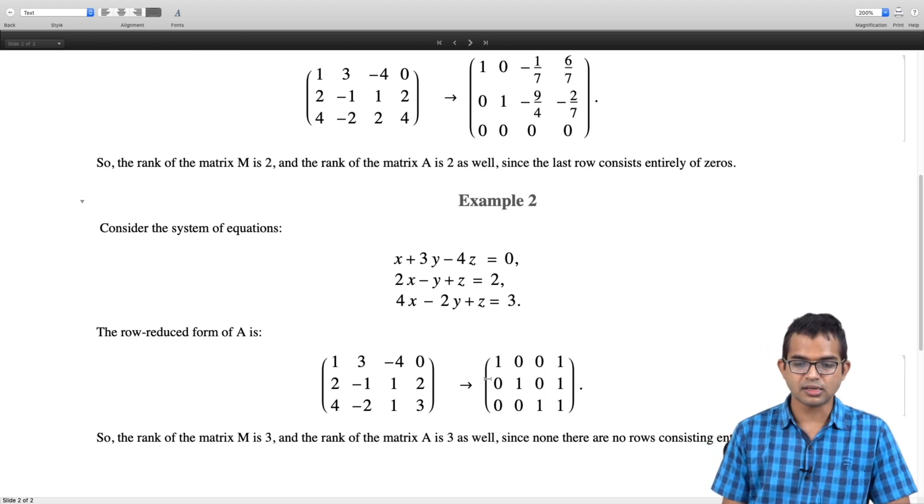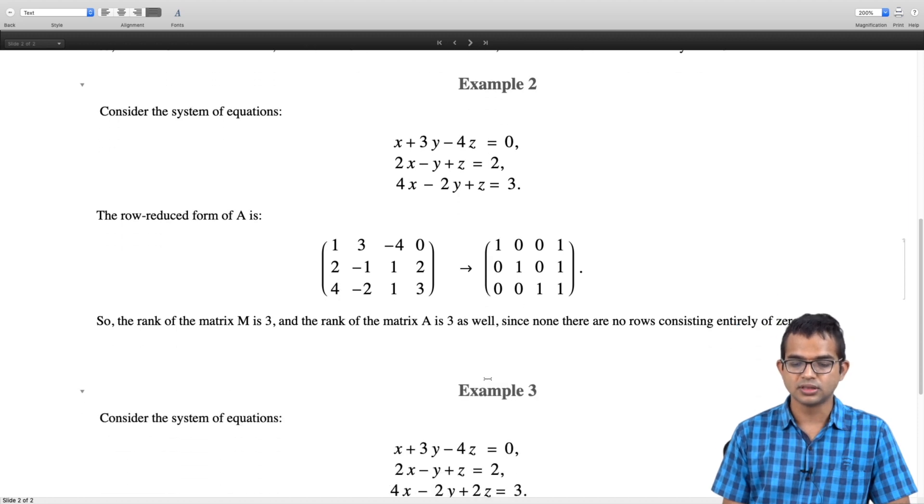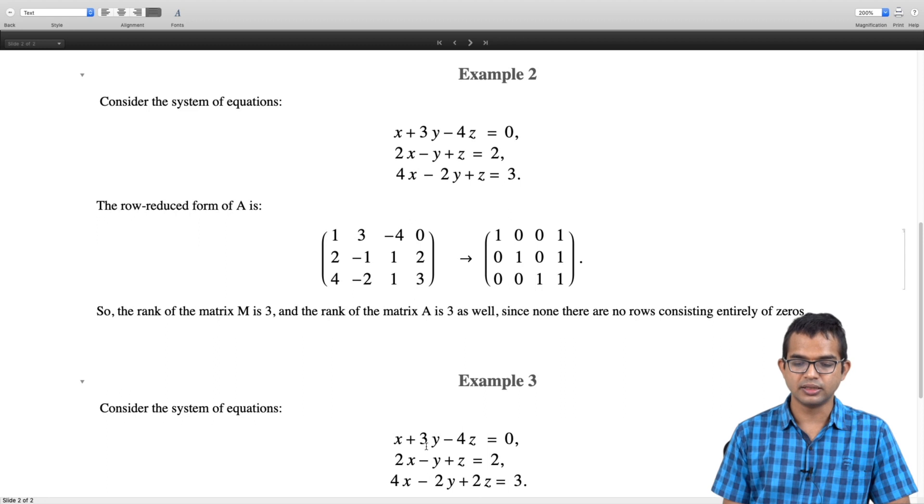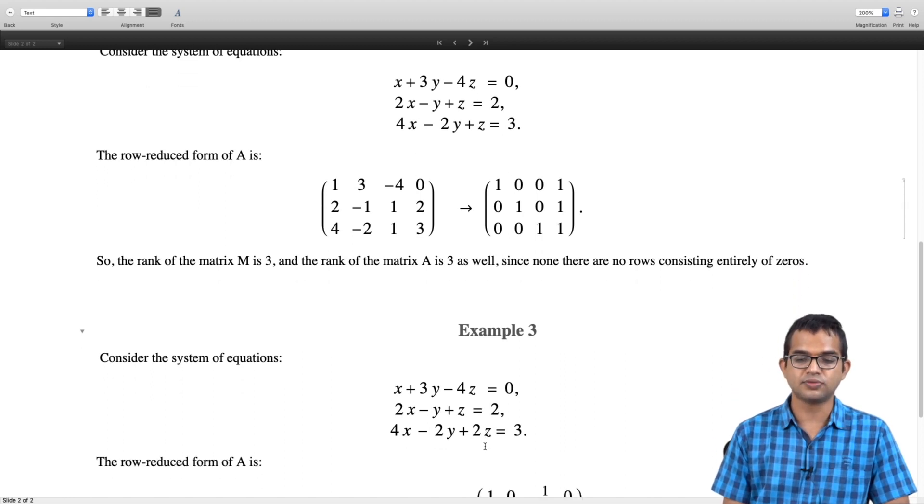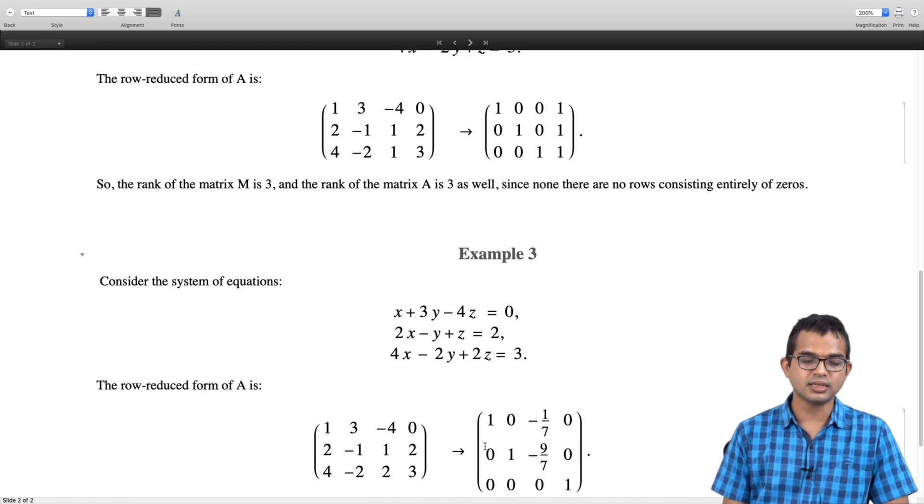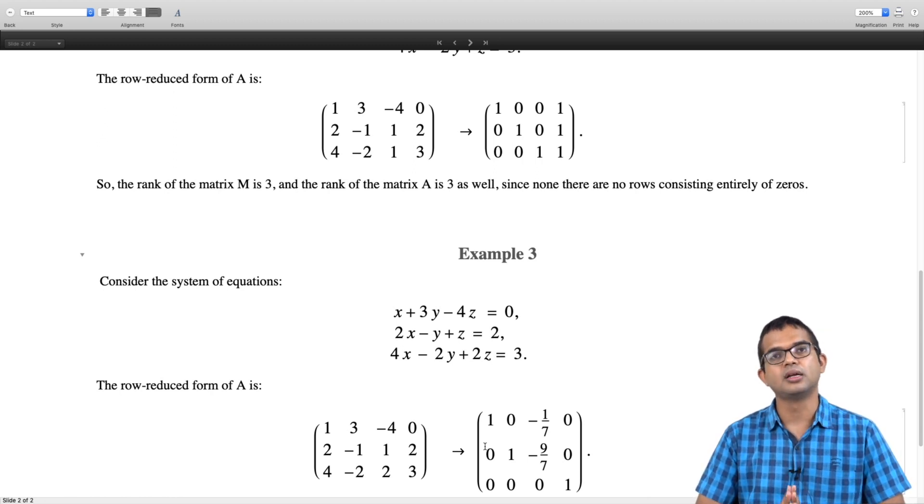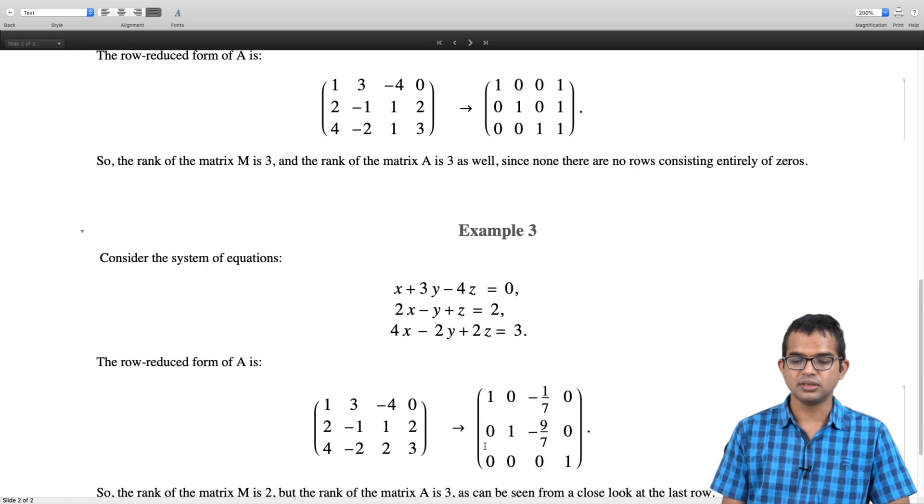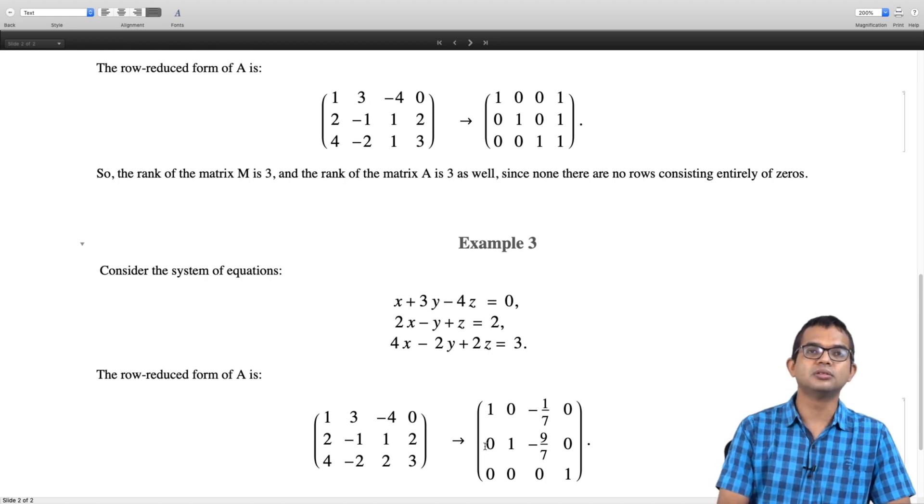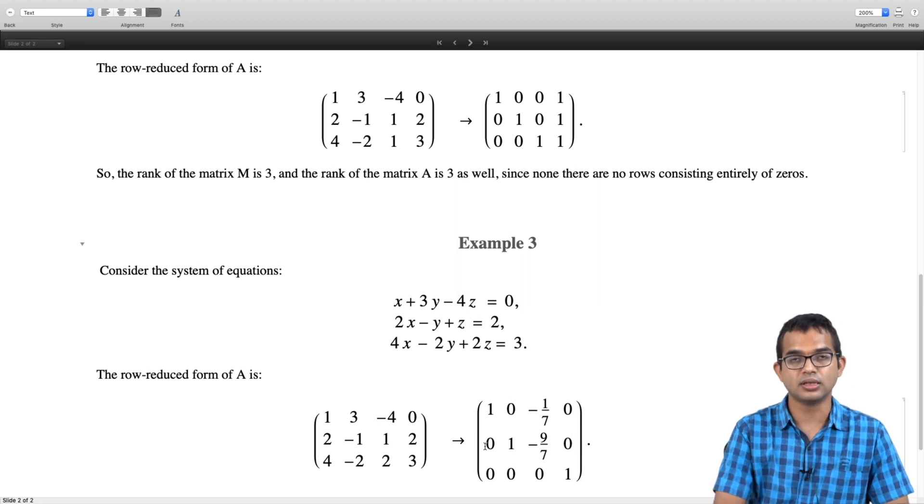Now let us look at a third example where again I have tweaked the same sort of equations—the third equation I have made slightly different. I have x + 3y - 4z = 0 as it is, 2x - y + z = 2 as it is, but I am changing it to 4x - 2y + 2z = 3. It is different from example 1 and example 2. In this case again you can start with the augmented matrix and go ahead and do the whole drill, and then you will see—so this you need to do yourself and check that the row echelon form in this case gives you this answer, which is different from both the forms that you have seen before in example 1 and example 2.